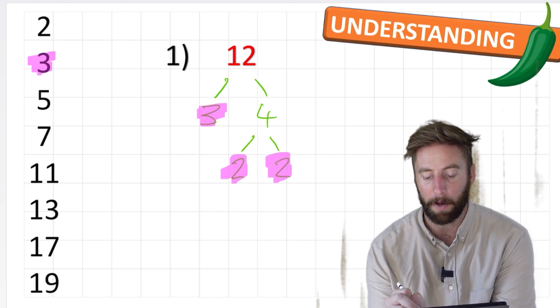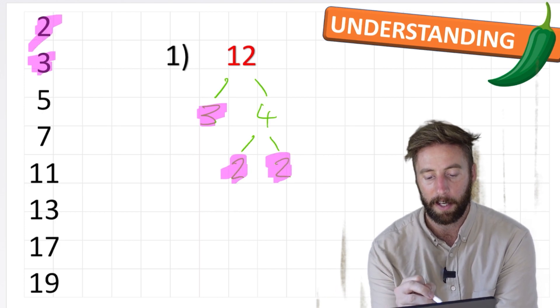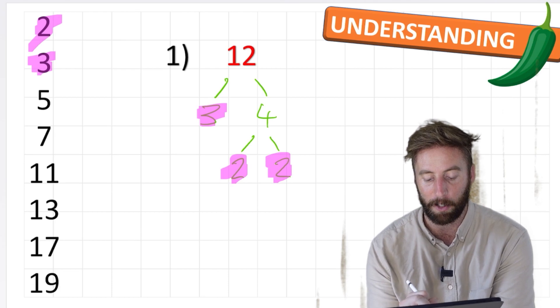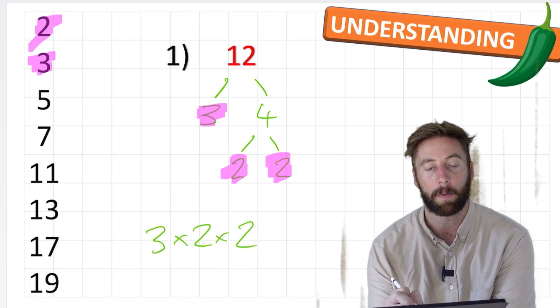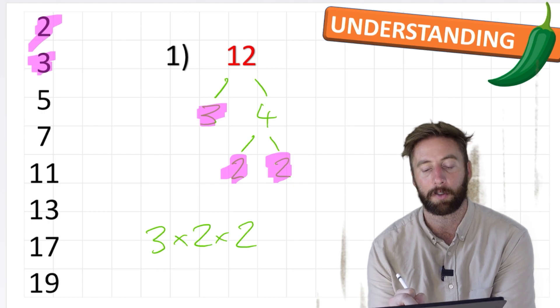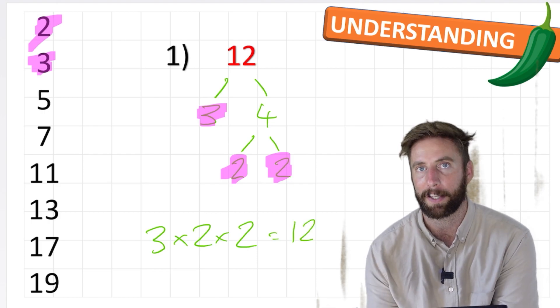And 2 is a prime number. And therefore, I can't go any further. And I actually have the exact same numbers as before. We have 3 times 2 times 2. 3 times 2 is 6 times 2 is 12. So we get the same answer.